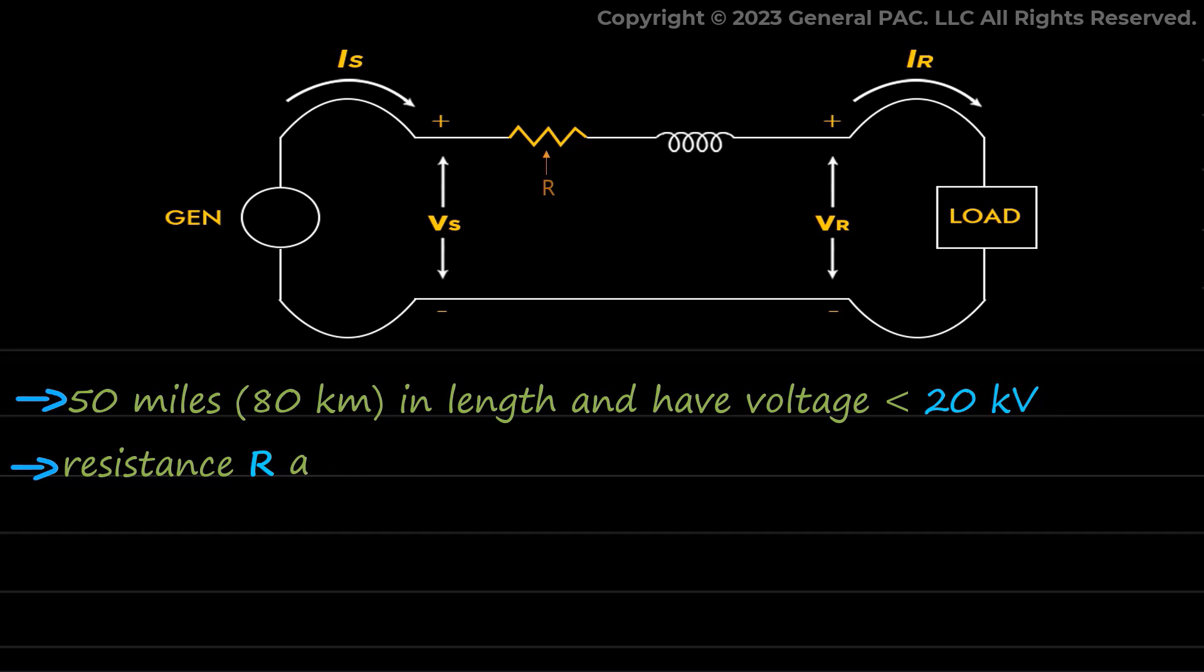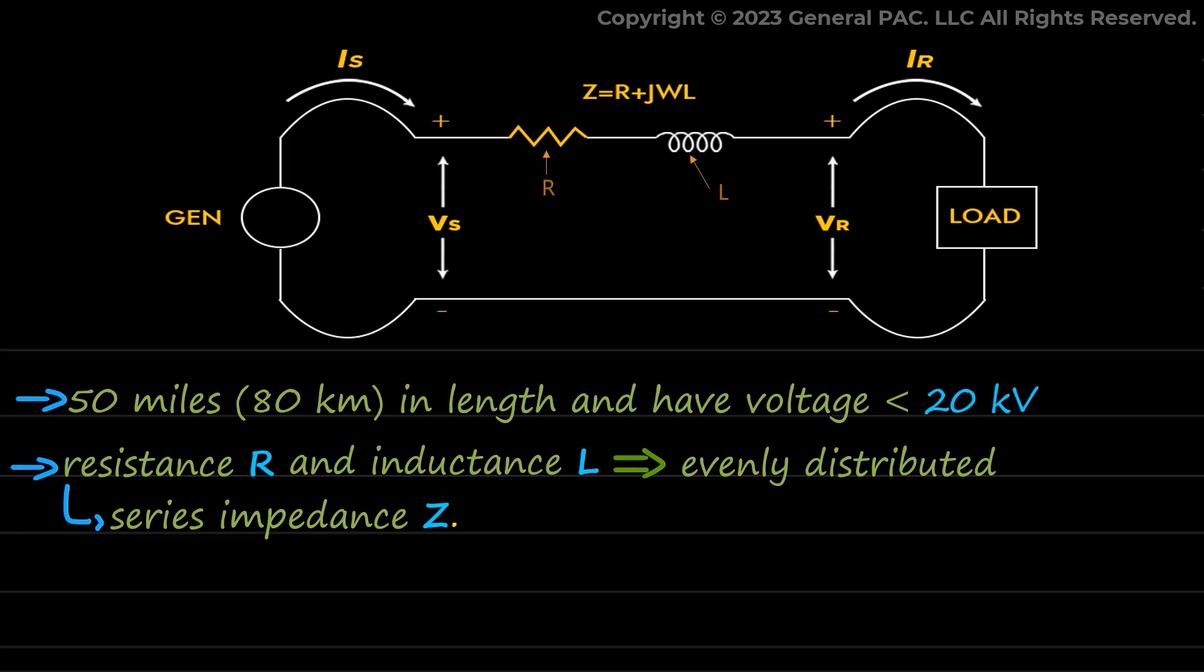The resistance R and inductance L are considered to be evenly distributed along the line shown as series impedance Z. Shunt capacitance, although present, is so small that it is considered negligible and omitted without much effect on accuracy. This makes it easier to understand and model short lines.